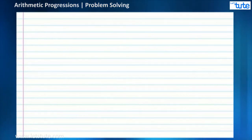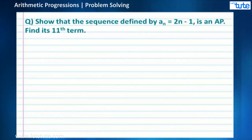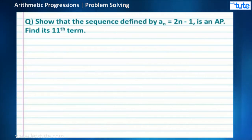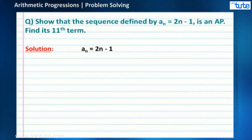Let us move on to the next question: Show that the sequence defined by an = 2n - 1 is an AP, and find its 11th term. We need to find out whether the sequence defined by an = 2n - 1 is an AP, and also find the 11th term.